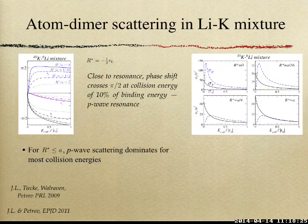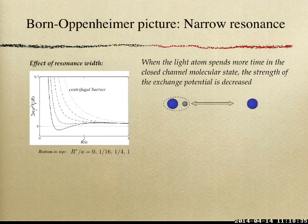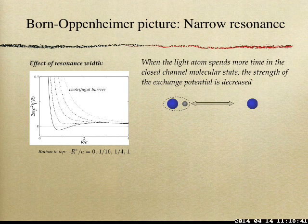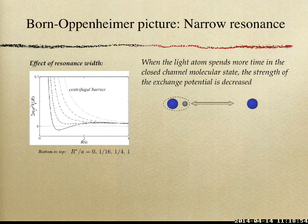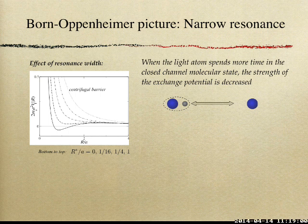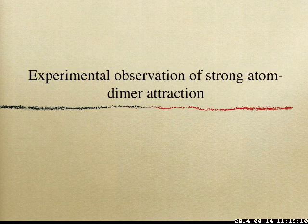Increasing the effective range decreases the phase shifts. This can also be seen in the Born-Oppenheimer potential: having a finite effective range essentially reduces the effect of the atom-dimer interaction towards the centrifugal barrier. To account for this in Born-Oppenheimer, you modify the Bethe-Peierls boundary condition with an extra parameter for the effective range.